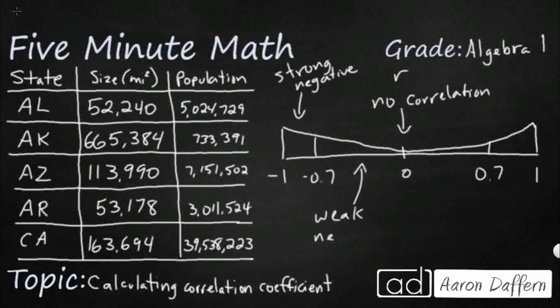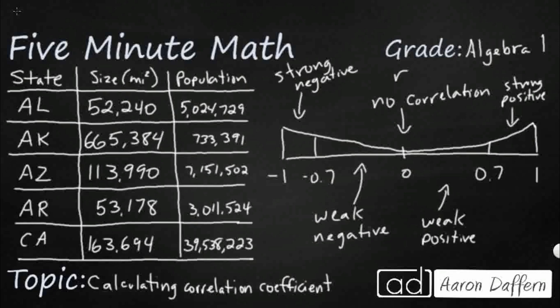Those are the two different terms we're really using here: strong and weak. If our r is between 0 and positive 0.7, that's going to be a weak positive — as one gets bigger, the other also gets bigger, but it's not a strong relationship. That comes when you get between positive 0.7 and 1. That's how we're going to interpret our r. Now, to calculate r, that's where we're going to need a graphing calculator.